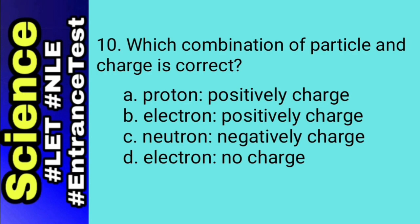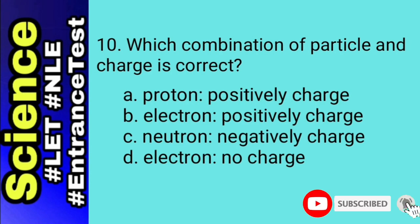Let's do elimination on this part. Starting from letter D: electron, no charge, is incorrect because electron is a negatively charged particle. Letter C, neutron negatively charged, is also incorrect because neutron has no charge. Letter B, electron positively charged — electron, as stated, is negatively charged. So the answer for this is letter A, proton, positively charged.